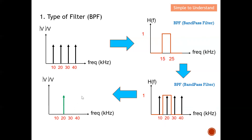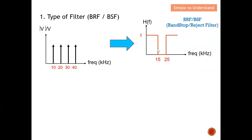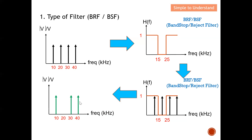Last but not least, the band reject or band stop filter with the same four input components and cutoff frequencies at 15 kHz and 25 kHz. Putting the two diagrams together, you can see that the 20 kHz component in the middle is removed, while the 10 kHz, 30 kHz, and 40 kHz components are able to pass through. This results in three components at the output of the band reject or band stop filter.